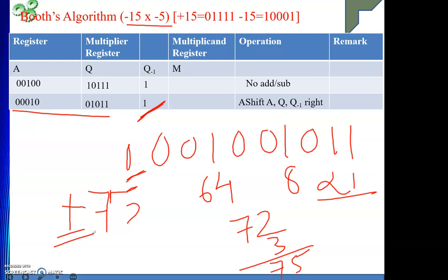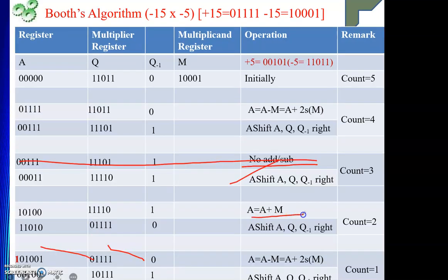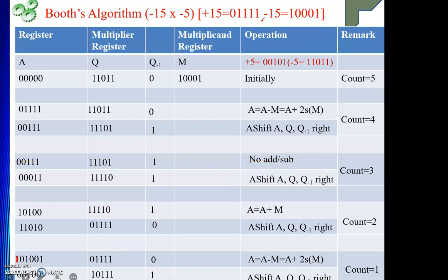Please remember while doing the numericals: every time you check this part carefully — when you are doing addition, directly take your multiplicand; when you are doing subtraction, take the 2's complement of your multiplicand. That part has to be very, very clear, because sometimes we know the answer but we are not arriving at it. So do all steps carefully and you will definitely get the correct result. This is all for the Booth's algorithm part.